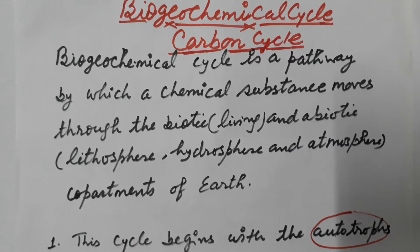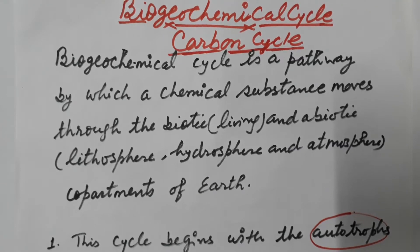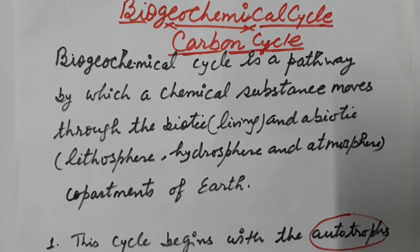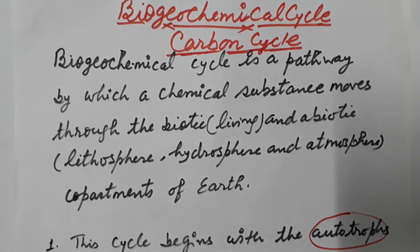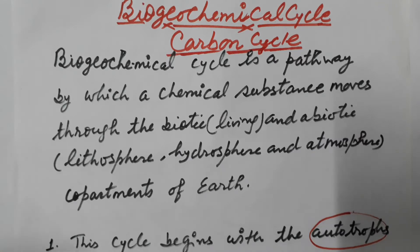Hi everyone, this is your biology class. I am your teacher Seema Atreja. Welcome you all in my class. In our previous video we discussed about the nitrogen cycle. In this video I am going to discuss one more biogeochemical cycle, that is the carbon cycle. As we all know, a biogeochemical cycle is a pathway by which a chemical substance moves through the biotic (living) and abiotic (non-living) components of the earth like lithosphere, hydrosphere and atmosphere.